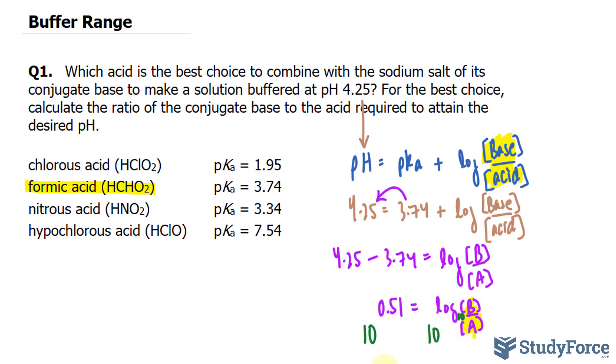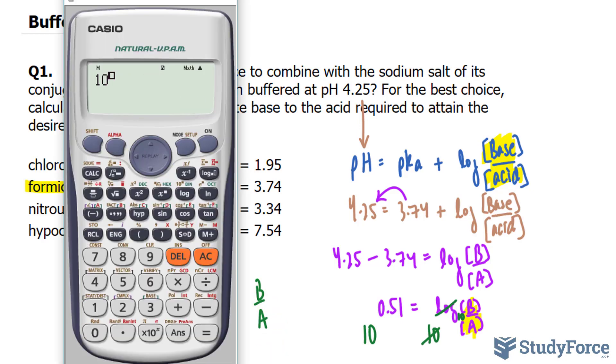So when you raise it to a base of 10, this and this cancel out, leaving you with 10 raised to the power of 0.51 is equal to the ratio that we're looking for. Base concentration over acid concentration. Using our calculator, 10 raised to the power of 0.51 gives us 3.235.